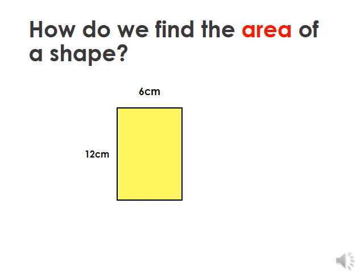Hopefully you would have remembered that to find the area of a shape, we're going to do length times width. So we're going to be doing 12 centimetres times by 6 centimetres. And if you're struggling to do that in your head and you don't know your 12 times tables, remember we can always partition this number. We could split it into 10 and 2. So 6 times 10 is 60, 6 times 2 is 12, and put together we get 72. So the area of this shape is 72 centimetres squared.